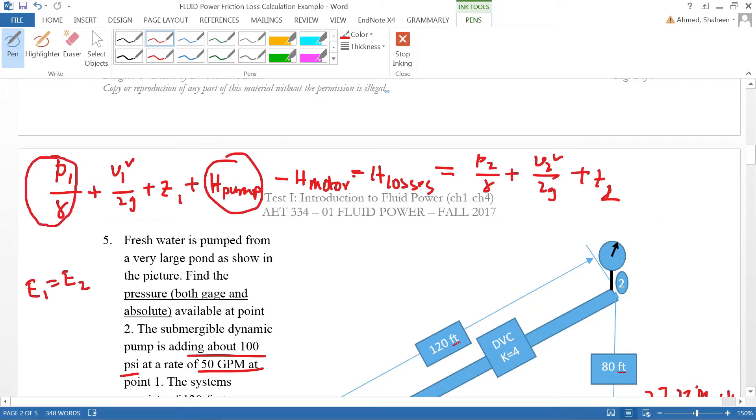Same thing. Actually, the pressure head is equal to P by gamma. So they are basically the same thing for this particular problem. So you just add one of them, not two.